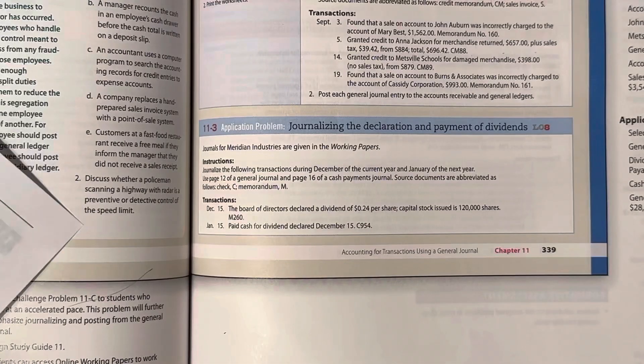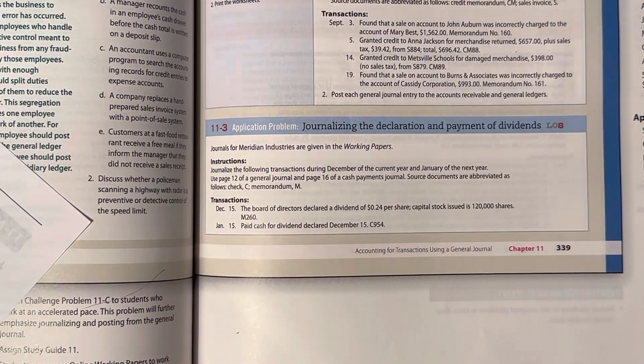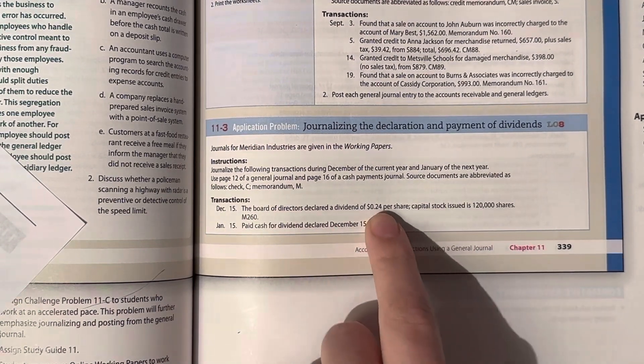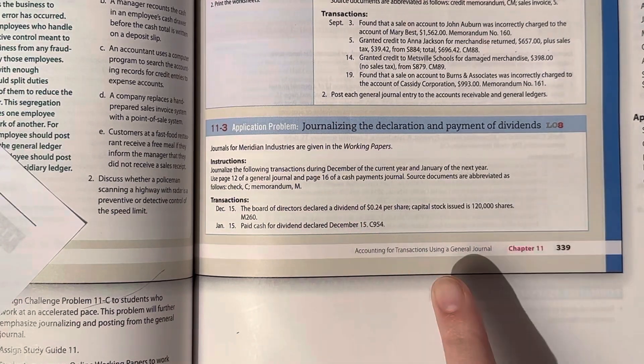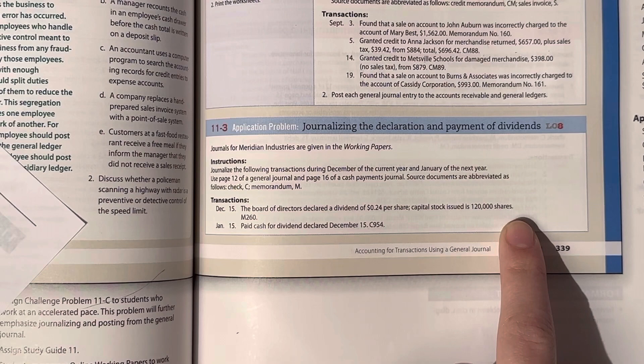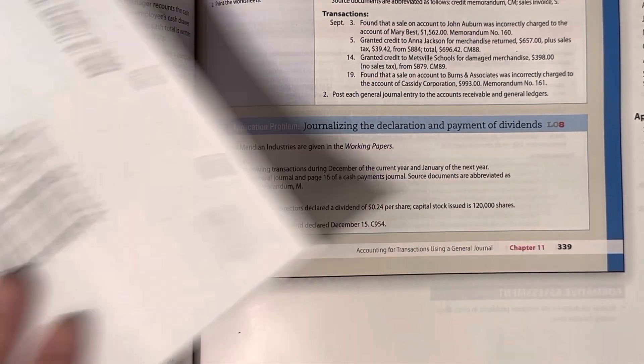Then I move on and it says, source documents are abbreviated as follows. Check is C, memorandum is M. So on December 15th, the board of directors declared a dividend of 24 cents per share. The capital stock issued was 120,000 shares. So we multiply 24 cents times 120,000 shares.